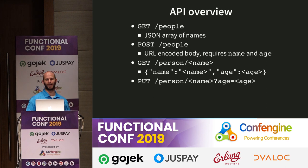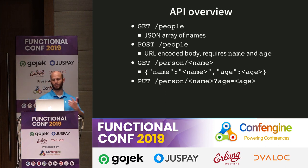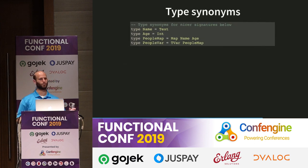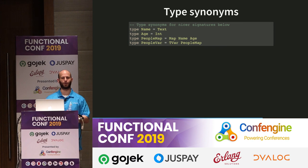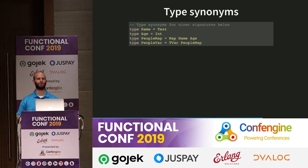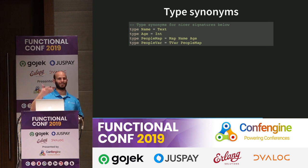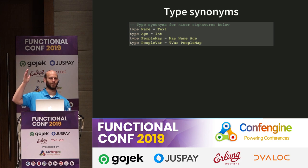The API has: GET /people, returning a JSON array of names; POST /people, with URL-encoded body requiring name and age parameters; GET /person/{name}, returning a JSON object; and PUT /person/{name}?age={age}. To make it easier to read the type signatures, I'll define some type synonyms: Name is a piece of Text, Age is an Int, PeopleMap is a mapping from Name to Age, and PeopleVar is a TVar holding that map. Who here has ever heard of STM? STM — software transactional memory — is one of Haskell's superpowers and you should definitely use it.